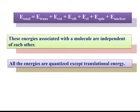All the energies are quantized except translational energy. This means quantized energy levels exist for rotational energy and vibrational energy — meaning they have some particular, discrete amounts of energy. These forms of energy are known as quantized energy levels, whereas translational energy is non-quantized because discrete energy levels don't exist for translational energy.